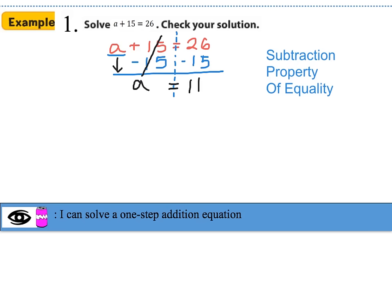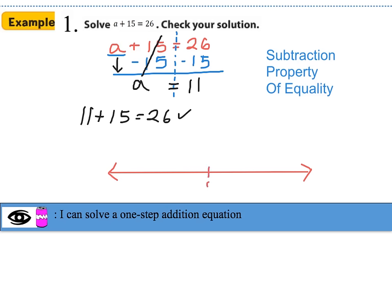Let's check our solution by plugging it back into the equation. The value of a is 11, so 11 plus 15 gives us 26 — and that checks out. Now let's graph this solution on a number line. I'll place 0 in the middle and graph positive 11 on the positive side. We'll identify it with a solid dot because that is the only number that would make this equation true.